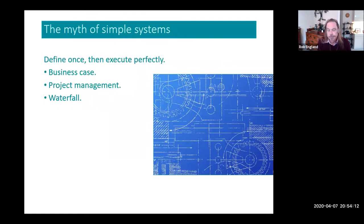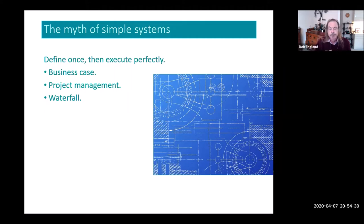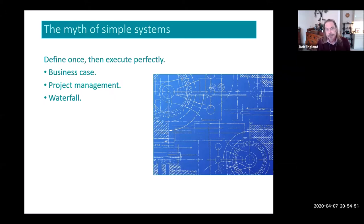This exhibits itself in one of the biggest problems we have in IT, and across organizations generally: the myth that we're dealing with a simple system. When we think we're dealing with a simple system and we're not, we have this ridiculous approach where we define once and expect people to execute perfectly. This is the problem with waterfall and conventional projects — gather the requirements, do a single design, build it, then measure whether we built it well. Waterfall project management can be described as building last year's requirements. It's too slow and too unresponsive.